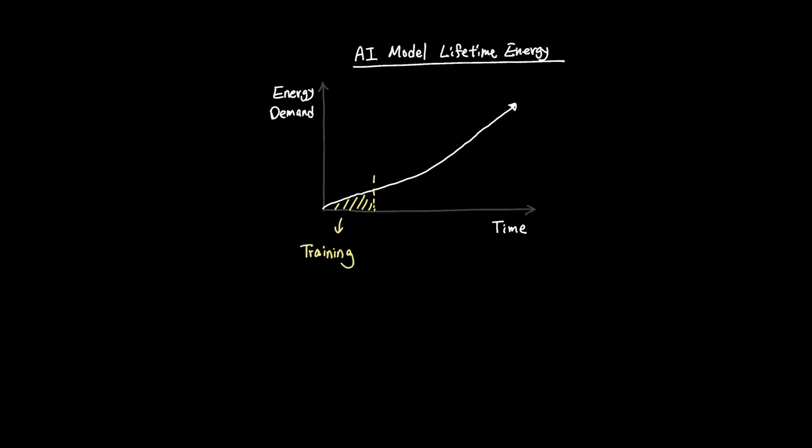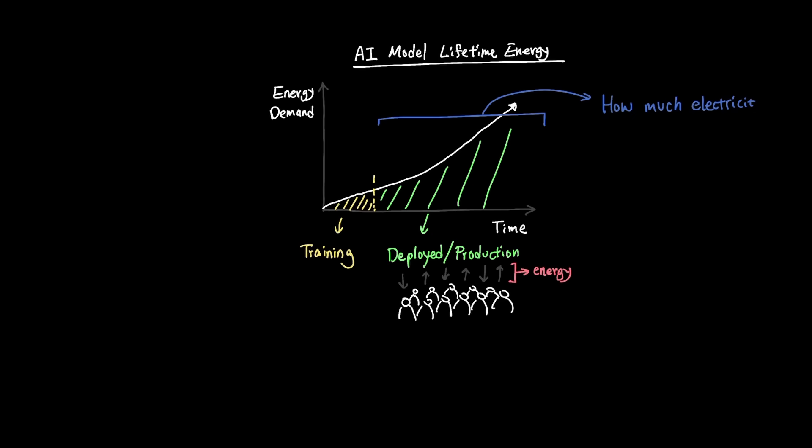But training is only a portion of the total energy that's needed for the AI model. Meaning deploying the train model to production to be used by general public to make inference requires more energy than what we just saw in the training energy demands. So the next natural question is this. How much electricity is needed to actually run these AI models in production?